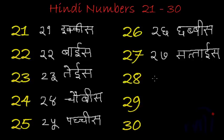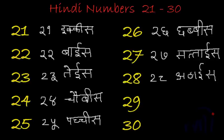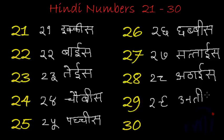28 is called athaais — do or aat — athaais. 29 is called unntis, and 30 is written as teen shunya — tis.